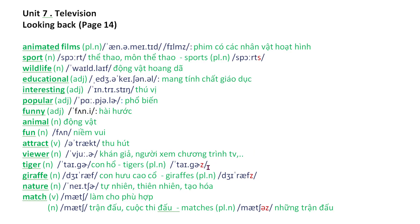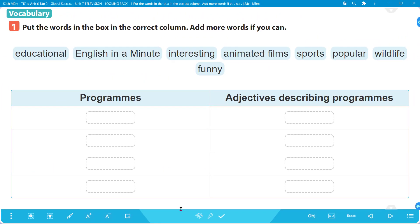'Tiger' - con hổ, danh từ số nhiều là 'tigers' - những con hổ. 'Giraffe' - con hươu cao cổ, số nhiều là 'giraffes'. 'Nature' - danh từ tự nhiên, thiên nhiên. 'Match' - động từ làm phù hợp; danh từ là trận đấu, cuộc thi đấu; số nhiều là 'matches'. Now let's go back to our lesson.